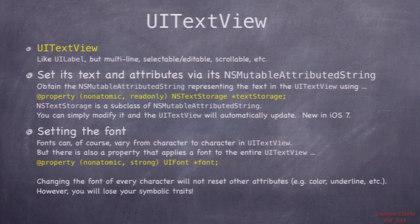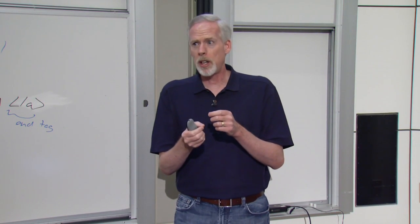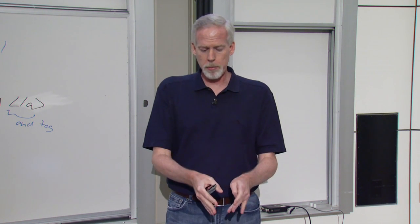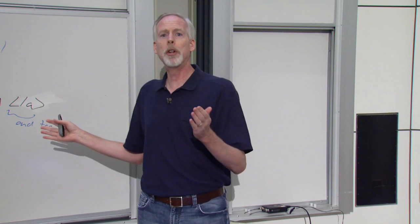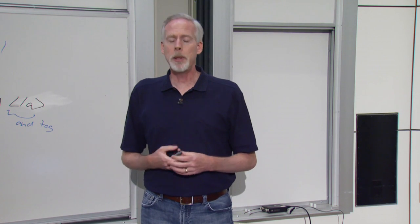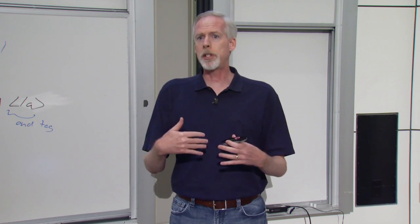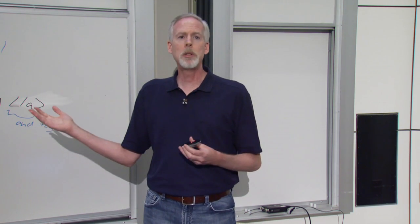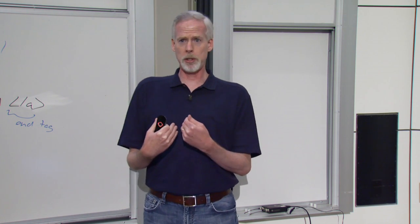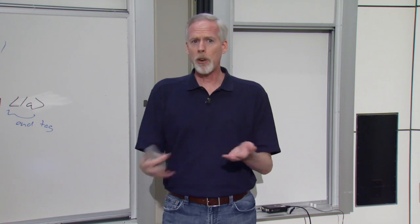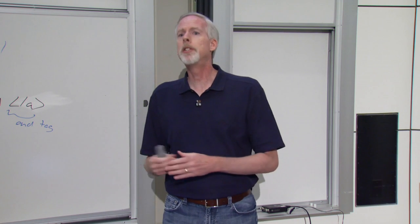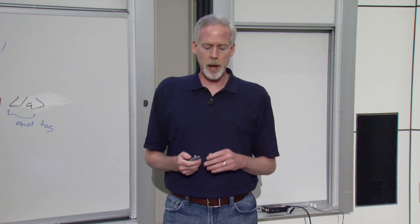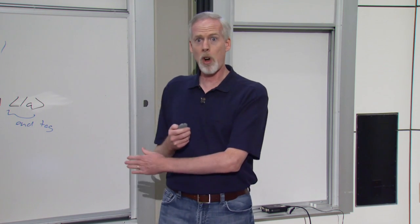There are some methods on UITextView, like the font property, where you can just set the font. Understand though that when you set the font, all it's doing is going through every character in the mutable string and setting the font attribute name to this font. Remember that bold and italic are attributes of the font, and so is the size. So if you call the set font setter, it's going to blast all of your bolds, italics, and sizes. If you want to set the font of every character and have those traits preserved, do a little for loop, go through all the attributes in the mutable string, get the font that's already there, grab the symbolic traits using the symbolic traits method on your font descriptor, create a new font that is the font you're trying to set plus those traits, and set it back as the attribute.